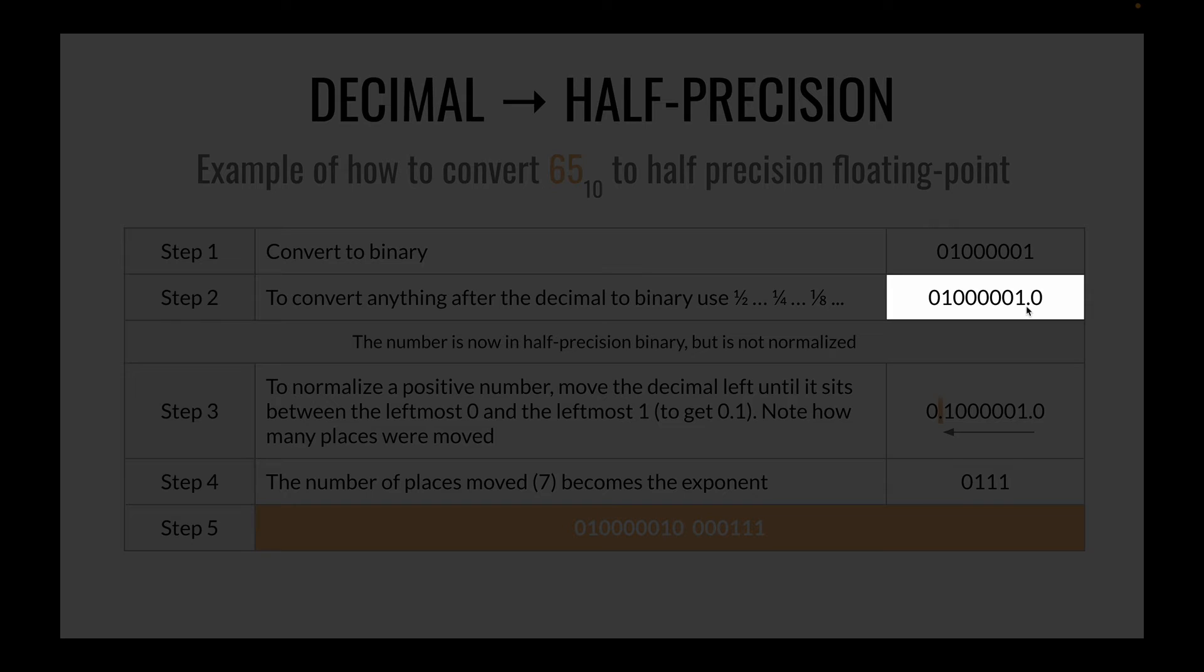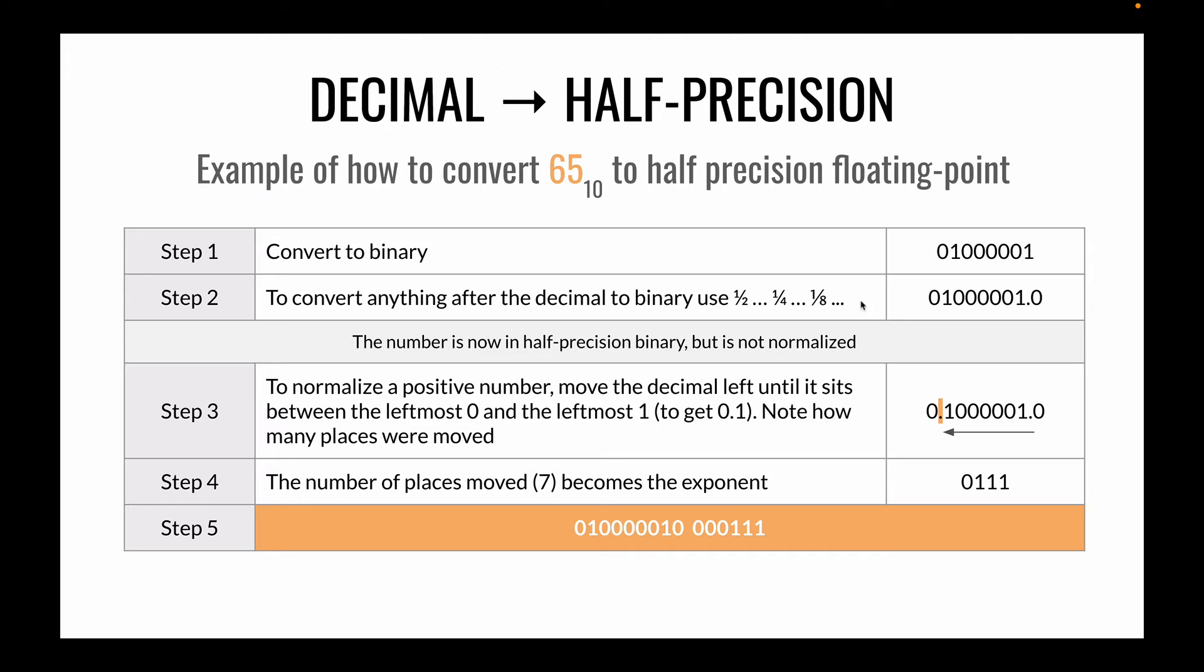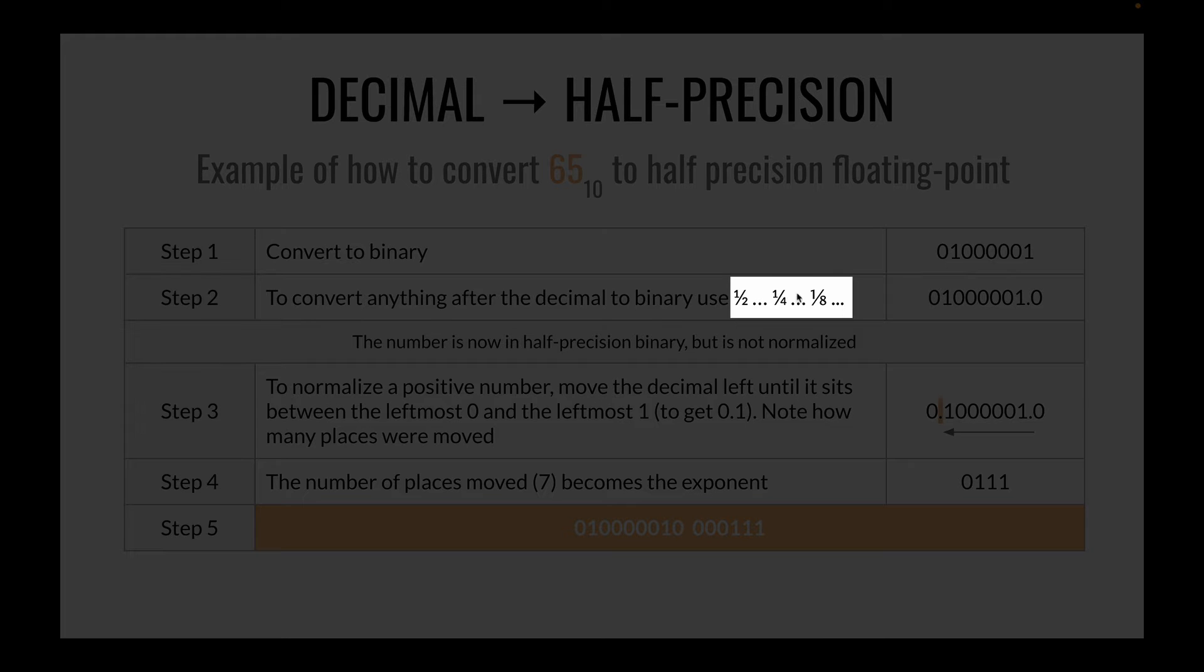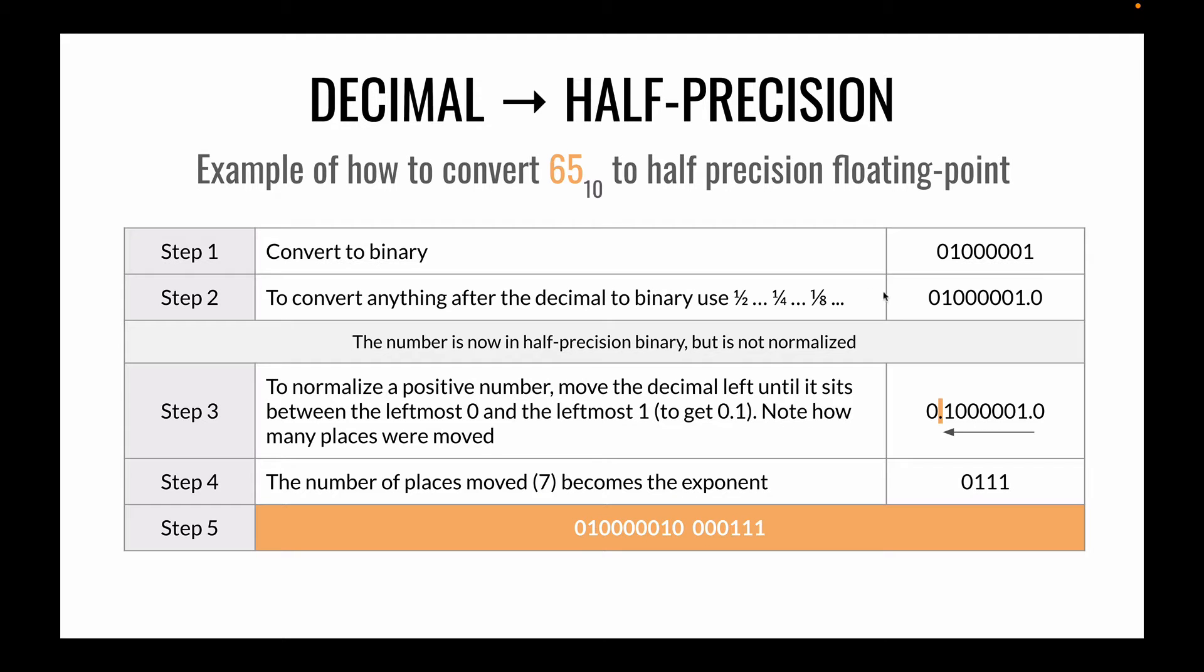All it is is the decimal place is there. Anything to the right of the decimal place will take the form of 1 over 2, 1 over 4, 1 over 8, etc. In this case it's 65.0, so we end up with 65.0, nothing there. Now to normalize this number we need to move the decimal place over until it sits between the leftmost 0 and the leftmost 1. And in this case it takes us 7 moves. So we end up with 65 normalized and an exponent of 7.